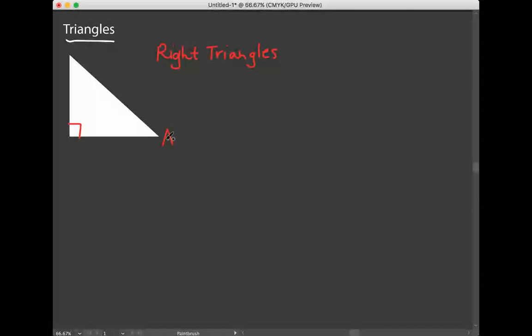The two acute angles, so the two angles in the triangle that are less than 90 degrees, we're going to call A and B. The 90-degree angle we're going to call C.